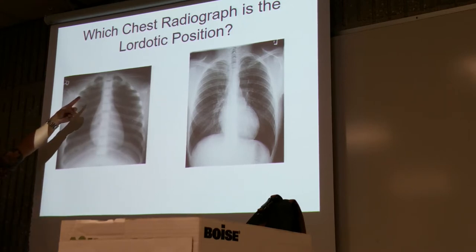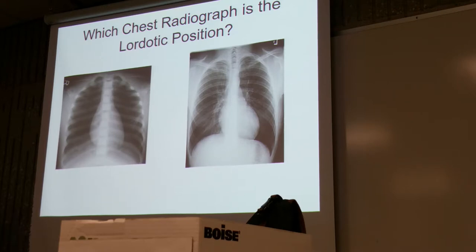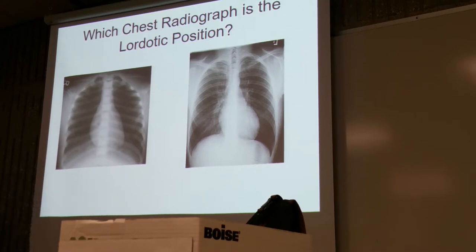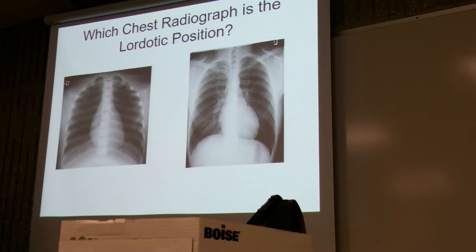Notice where they are now — the clavicles are way up there, and the orientation of the ribs is more horizontal than pointing downward. The whole purpose of this lordotic axial projection of the chest is to throw the clavicles up out of the way to assess the upper portions of the lungs. This particular projection is good for identifying tuberculosis, where it tends to be found at the apices of the lungs.